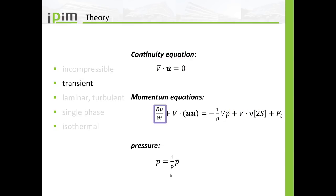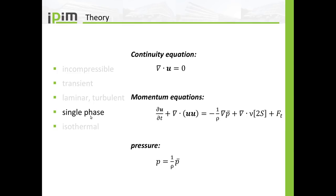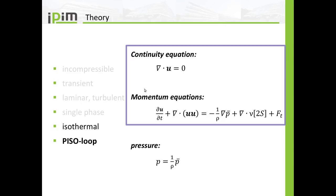Transient means that if in the solver it says that time equals a certain value, it really is a physical time rather than an iteration number as it was in simpleForm in the previous tutorial. We have partial time derivatives in the transport equations. Laminar and turbulent means we can solve equations for laminar flow and there is also a possibility to add terms for turbulence modeling. Single phase means there are no additional equations for multiphase phenomena and no energy equation. The continuity and momentum equations are combined into the PISO loop.